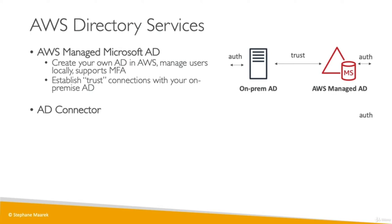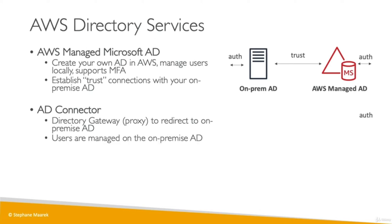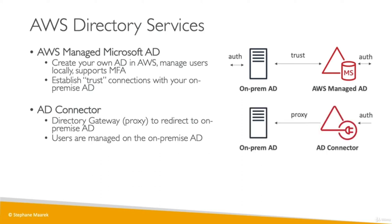Then we have AWS Directory Services AD Connector. This is a proxy to redirect your queries from the cloud into your on-premise AD. The users are therefore managed in only one place, which is the on-premise AD. The authentication goes through the AD Connector — which is a proxy — and gets proxied back to the on-premise AD to get the response. With the AD Connector, users are only defined on-premise, and we define a proxy to access that on-premise AD directly from the cloud.